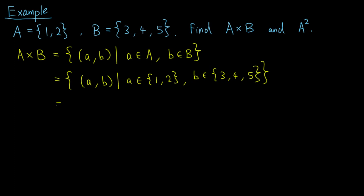First, we have the possibility that a equals 1, and b can be 3, 4, or 5. So we have the ordered pairs (1, 3), (1, 4), and (1, 5).